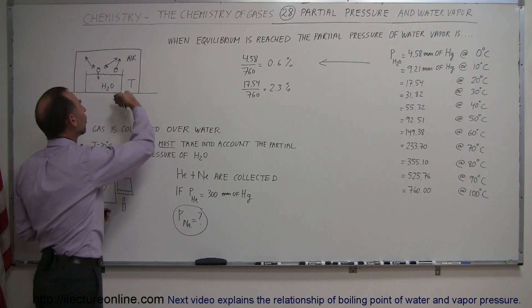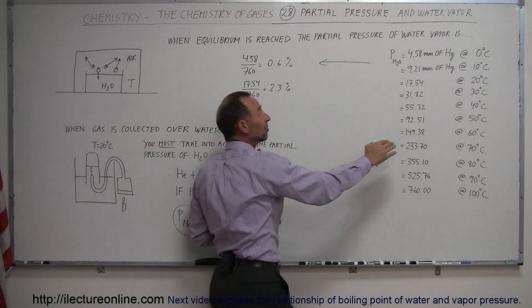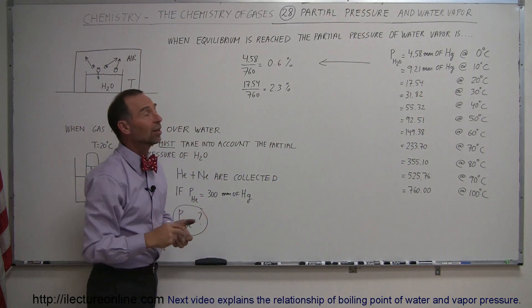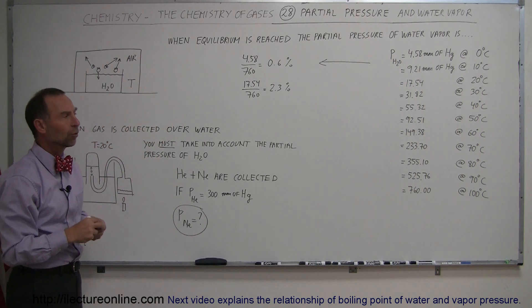The hotter it is, the more moisture the air can contain. For example, at 30 degrees centigrade it's almost double that. So that would be almost 4% of the air can be moisture and so forth.